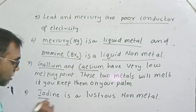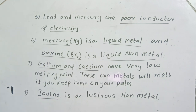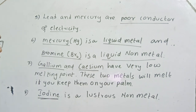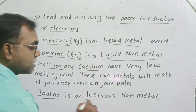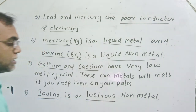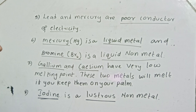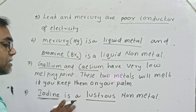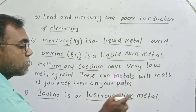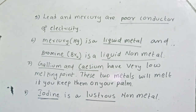Iodine is a non-metal, but it shows lustrous property. Lustrous property is generally shown by metals. So iodine is a lustrous non-metal.